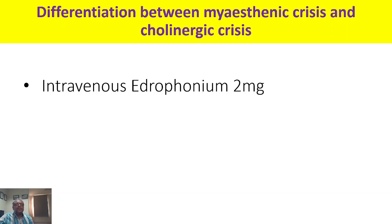Intravenous edrophonium, 2 mg, is the preferred drug or drug of choice for differentiating the two crises, because of its weak action, rapid onset, and very short duration of action.